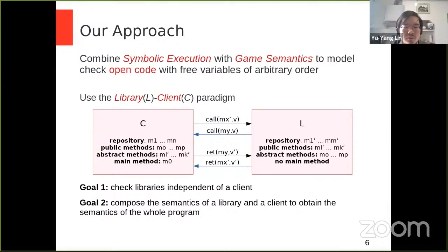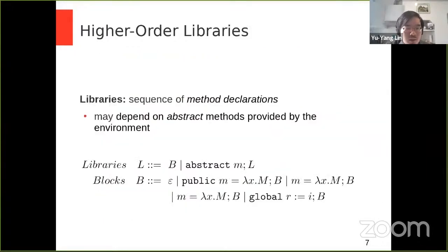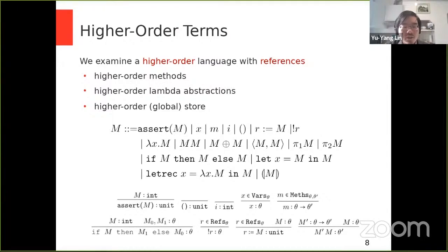A secondary objective here is that we also wanted to be compositional, in the sense that we want to check if we may want to check each component independently, and then compose the results to find errors in the composite system. However, as you shall see later, this is actually a requirement for soundness and completeness. As mentioned before, libraries are simply collections of methods. These are written here as sequences of either abstract method declarations, blocks of public and private method definitions, and global reference declarations.